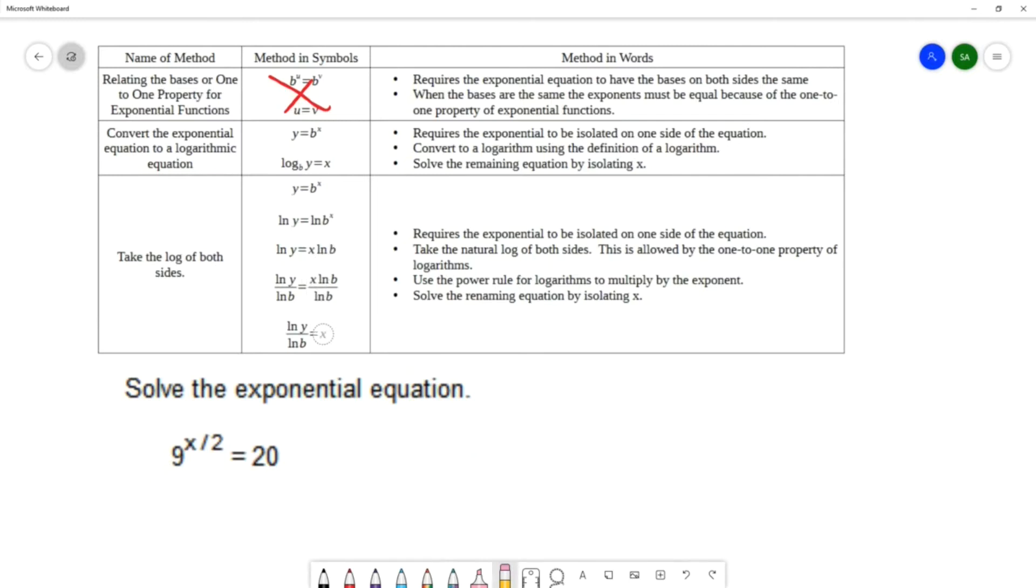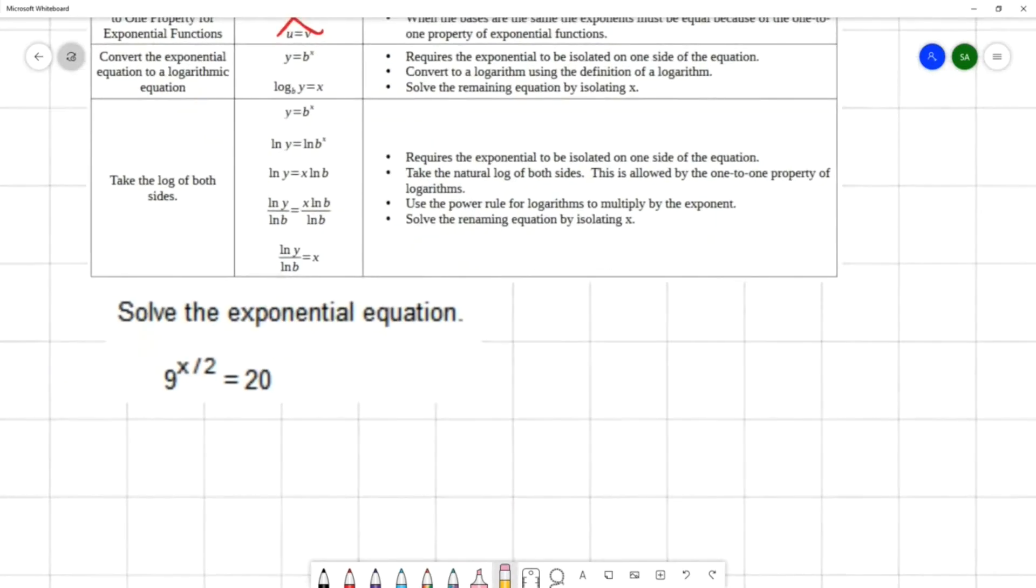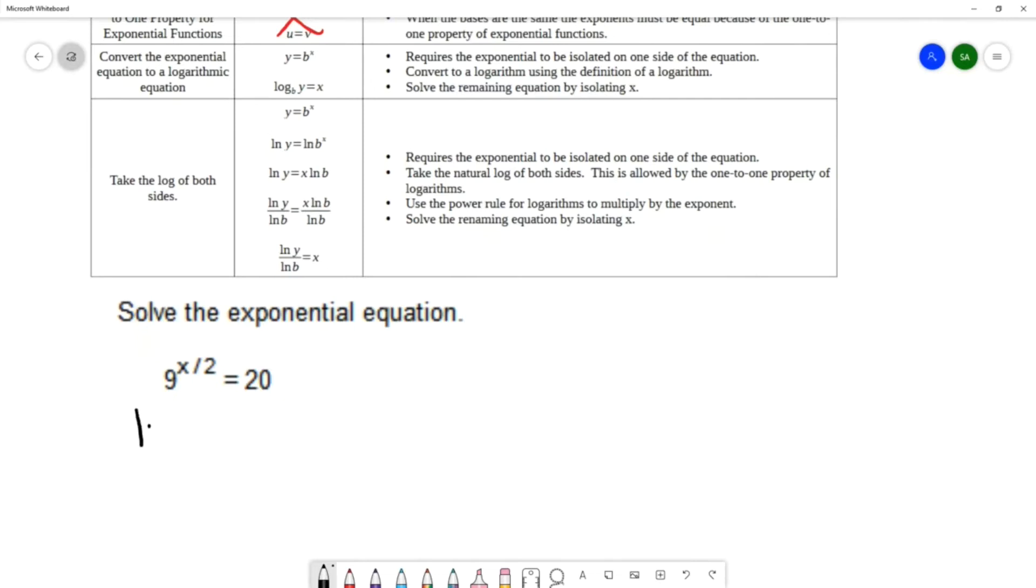Let me start by showing you the first method. If you would like to convert to a logarithmic equation, this is the way you would do it. You would use log with base b—that's base 9. The log always equals the exponent, so the exponent is x over 2.